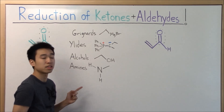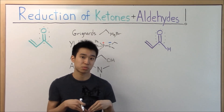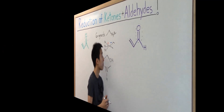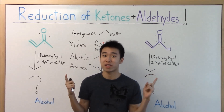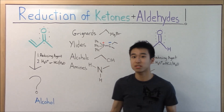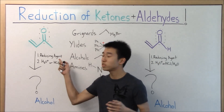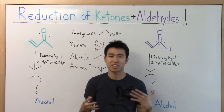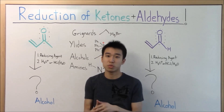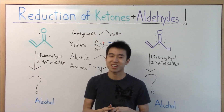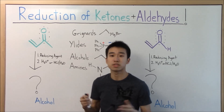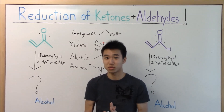If you guys need help with any of these reactions or reaction mechanisms, I've included links in the description box. I haven't done the Grignards yet, but if you'd like me to, give me a heads up. But anyway, let's say you don't want to react ketones or aldehydes with Grignards, ylids, alcohols, or amines — then what you can do is use reducing agents. This is really handy if you want to turn your ketone or aldehyde into an alcohol.